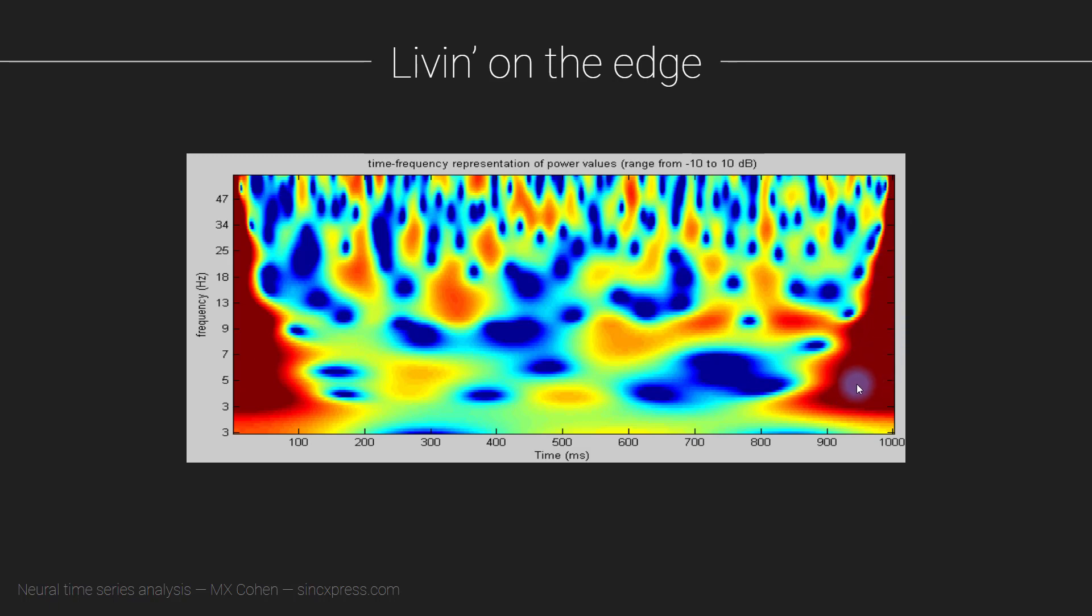These are edge effects. They are artifacts and they are contaminating, they are overriding the other signals, the other features that are actually happening in the EEG data.